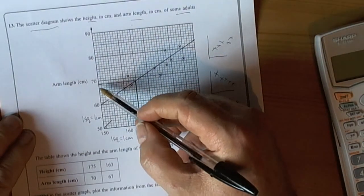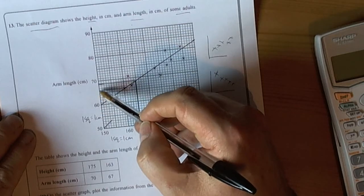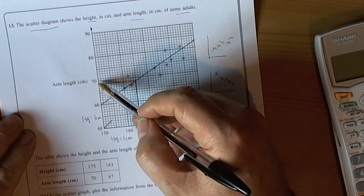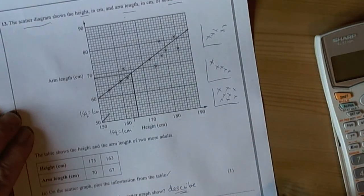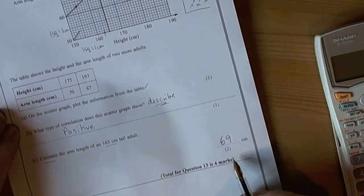So if we look carefully we can see that it's 60, 65, 66, 67, 68, 69 to the nearest centimeter as it wants an estimate. Nearest centimeter is fine. So we pop down 69 centimeters in the answer box.